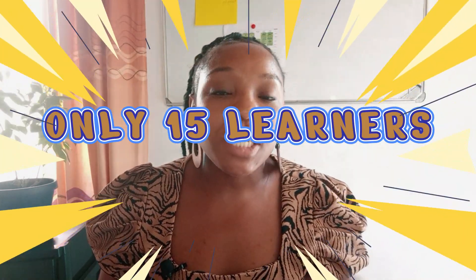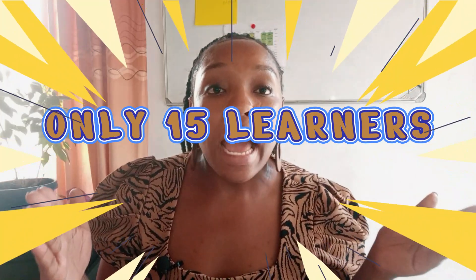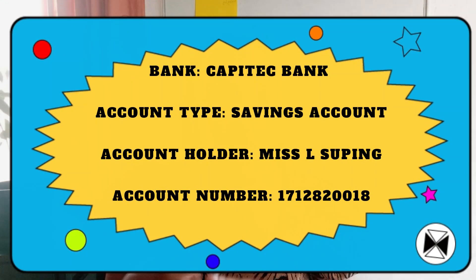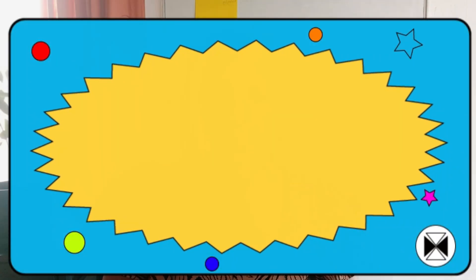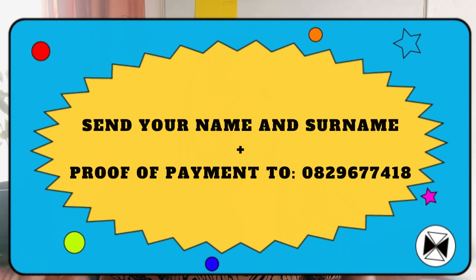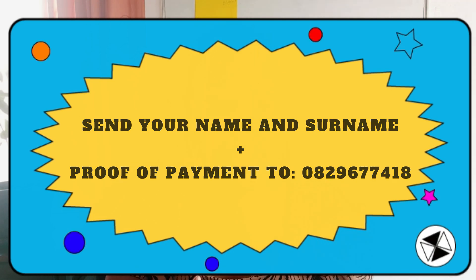It's on a first-come, first-served basis. I'm only going to take 15 people, so please make sure that you make a payment to the following bank account, referencing your name and your surname. I'm also going to share a WhatsApp number for you to send your proof of payment to. Once you've sent me your proof of payment, I'm going to add you to the group for the Grade 12 Mathematical Literacy Zoom lessons, where I'll send you the links for the Thursday and Saturday lessons.